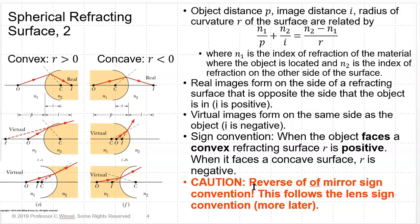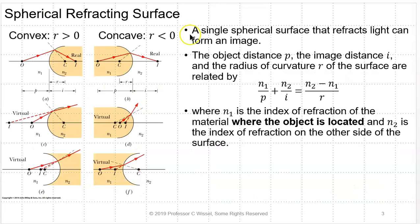This follows the lens sign convention, which we'll go into later. Virtually everything about mirrors and lenses is reversed. They use the same equations, but the sign conventions are reversed.